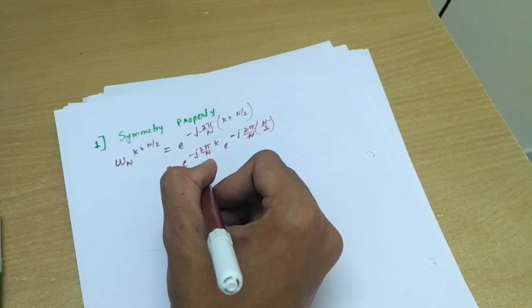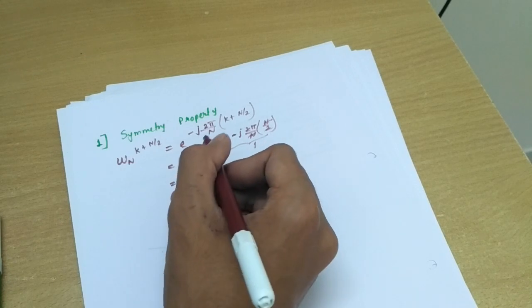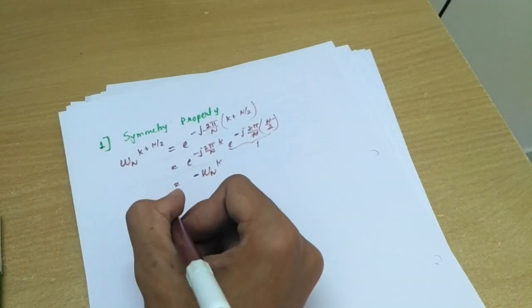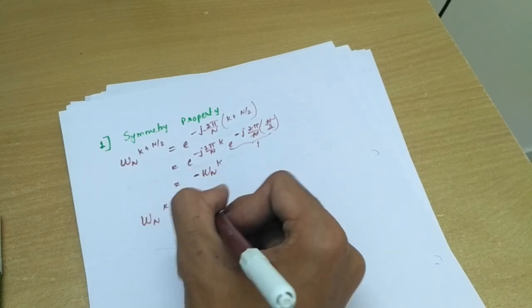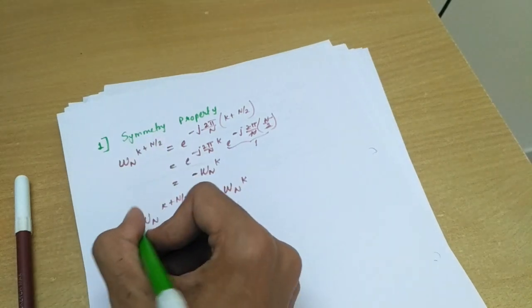So we will get minus W_N raised to k, since this is our original W_N. So we get W_N raised to k. So the property is W_N raised to k plus N by 2 equals minus W_N raised to k. This is our simple property.